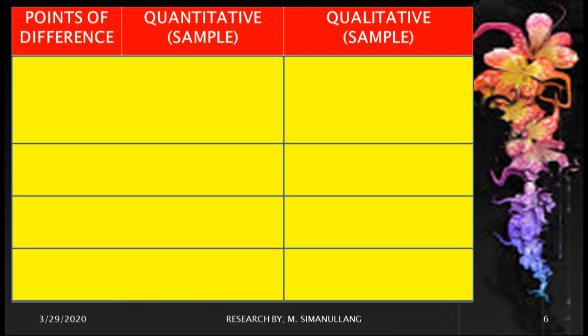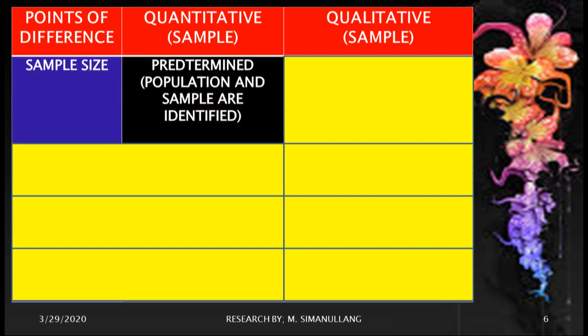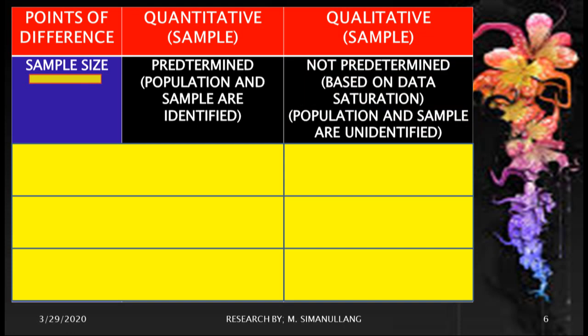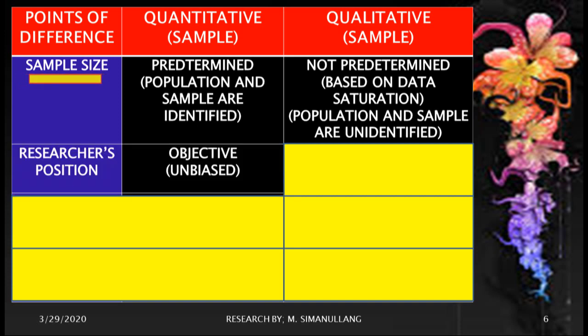Now for a conclusion summarizing the differences between sampling in quantitative and qualitative research. The first point deals with sample size. In quantitative research, the sample is predetermined by the researcher: the population and sample are identified before the data is obtained. While in qualitative research it is the opposite — it is not predetermined; the number of the sample is based on data saturation, and therefore the population and sample are unidentified.